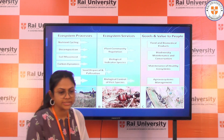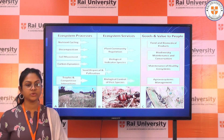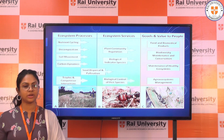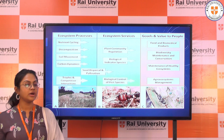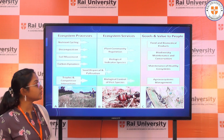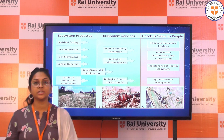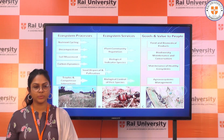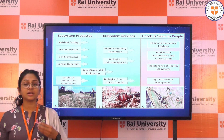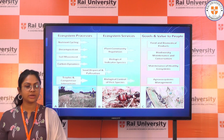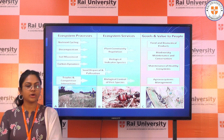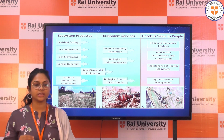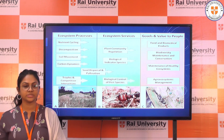The next is ecosystem processes. Ecosystem processes provide services, goods, and value to people. Ecosystem processes include nutrient cycling, decomposition, soil movement, carbon dynamics, and trophic and competitive interactions. All these things are included in ecosystem processes.